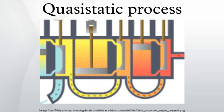In thermodynamics, a quasistatic process is a thermodynamic process that happens infinitely slowly. No real process is quasistatic, but such processes can be approximated by performing them very slowly.